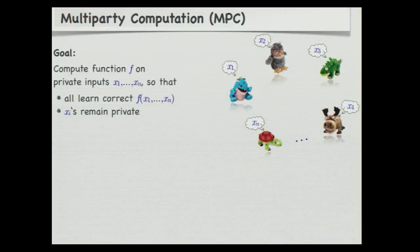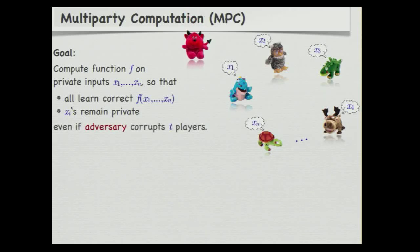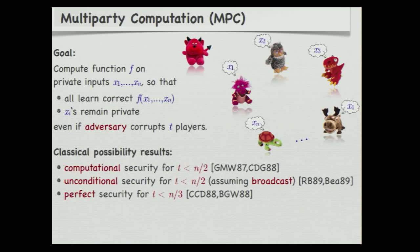We've already heard about multi-party computation. We have a group of players; everyone has a private input, and they want to compute some function on these inputs so that every player learns the right function value but all the private inputs remain private. This should hold even if there's an adversary that corrupts up to T of these players. This is possible in the computational and unconditional setting if T is smaller than n over 2, and it is possible with perfect security if T is smaller than n over 3.